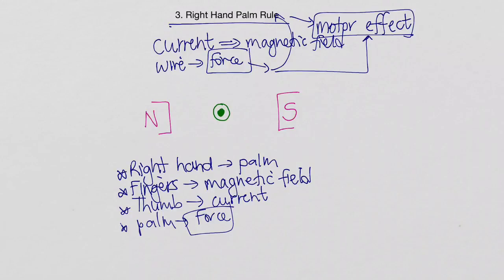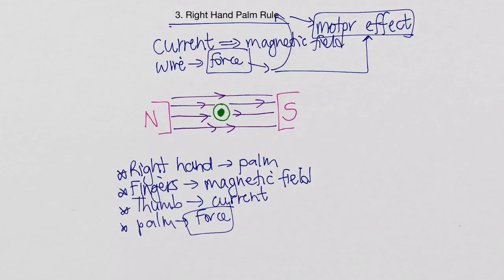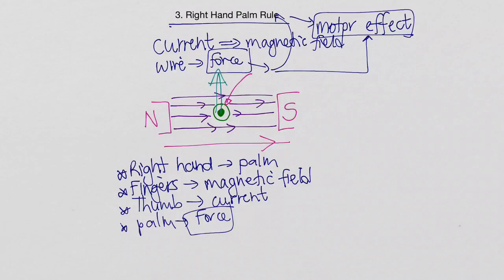Looking at our example — north on the left, south on the right, current coming towards us — I draw the magnetic field lines in purple from north to south. First, take your flat palm and point your fingers from left to right in the field direction. Second, since current is coming towards us, rotate your thumb so it points upwards. You will then see that your palm points towards the top of the screen — that is the direction of the force — and that wire will be forced upwards in these conditions.